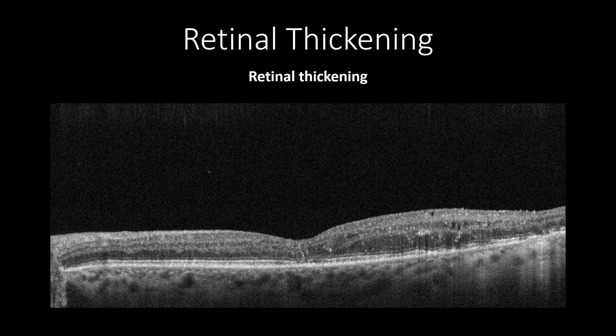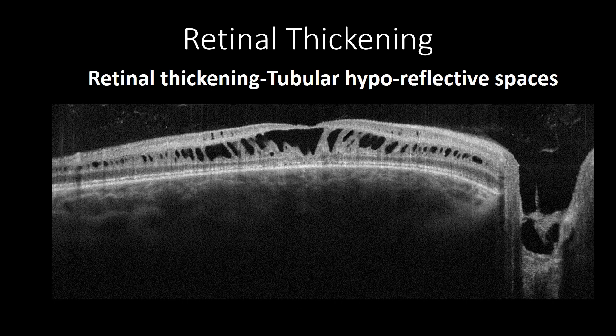Increased retinal thickening without any signs of cystic changes can be found in diabetic macular edema, tangential macular traction, and other macular pathologies. In cases of macular pathologies presenting with macular retinoschisis, there would be an increase in retinal thickening associated with cystic changes, which may have tubular hyperreflective spaces.